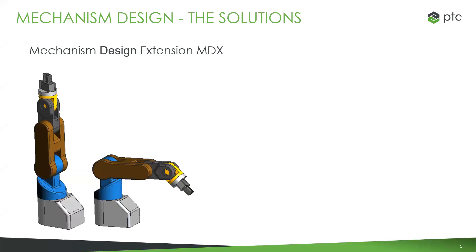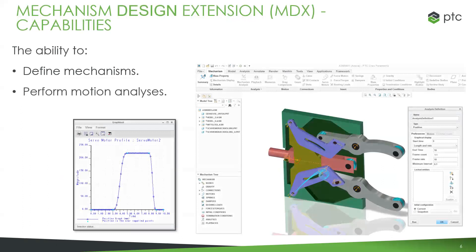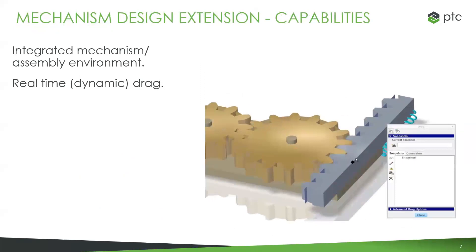Starting with the mechanism design extension — what we're doing here is working with the ability to define mechanisms, not just putting things on top of one another, but actually defining how they're going to work in the real world: things like pins, sliders, ball joints. Once I have those components together into a mechanism, I can run analyses, drag components around, and apply motors to drive them over a certain time frame. It's not just the size and shape of the models, but having the motion of the components be part of the design. Everything is right from within Creo — it's an application available right at the top of the screen, completely integrated.